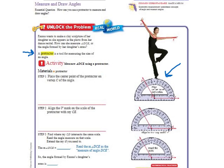This definition right here tells us a protractor is a tool for measuring the size of an angle. Emma wants to make a clay sculpture of her daughter as she appears in the photo from her dance recital. So this is her daughter. How can she measure angle DCE, so her arms, or the angle formed by her daughter's arms? So she wants to know how big to make this angle, the spread of this angle.